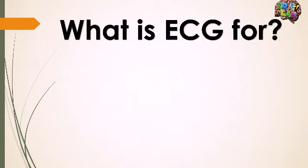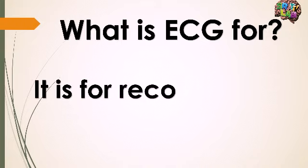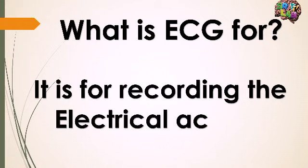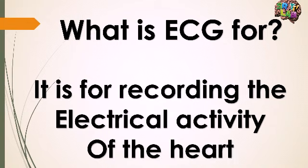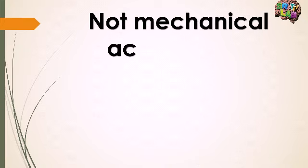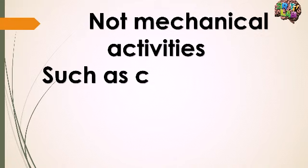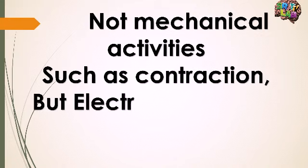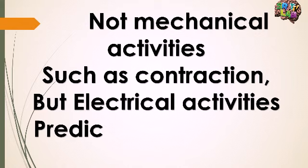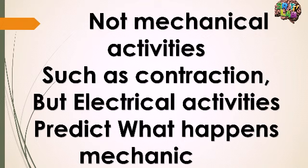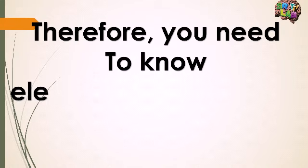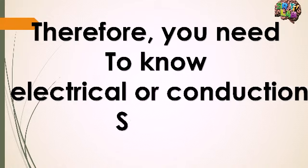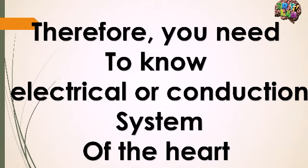ECG is used for recording the electrical activity of the heart. It is not used to record the mechanical activity of the heart such as contraction, but the electrical activities of the heart predict what happens mechanically. Therefore, you need to know the conduction or electrical system of the heart before we see ECG recording.